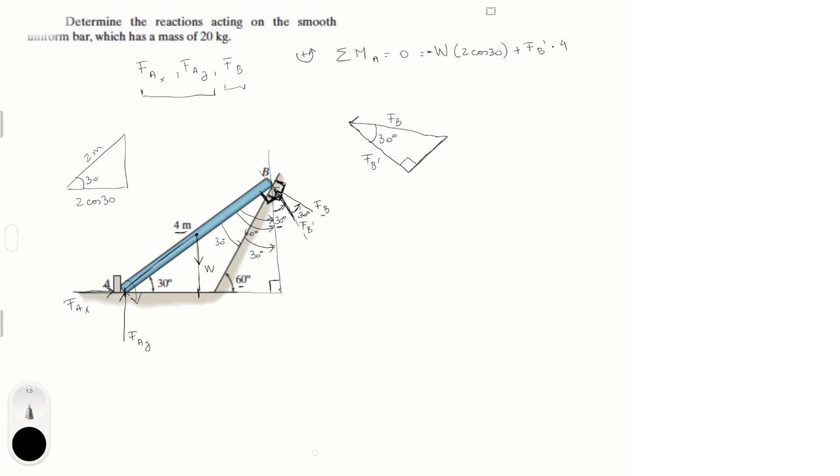So now you can see it should be pretty obvious that f_B prime is equal to f_B cosine of 30. So we're going to plug this in to here in this equation and I'm going to keep writing it down here. And that is equal to 0 equals the weight times 2 cosine of 30 negative, which is negative 339.83. Now 4 times cosine of 30 is 3.464 times f_B. And with this we can solve for f_B which is equal to 98.1 Newtons.